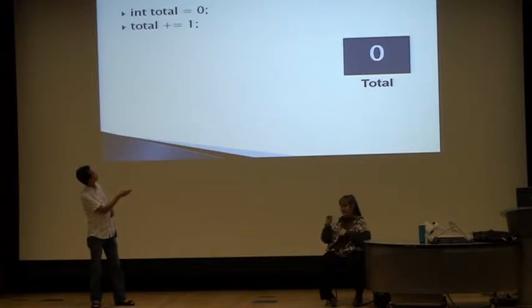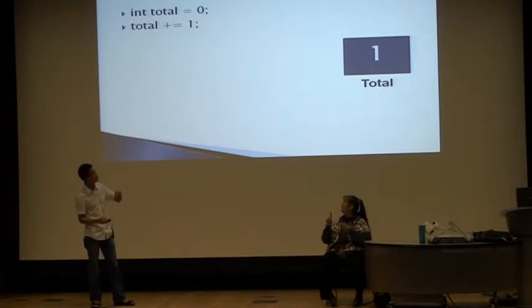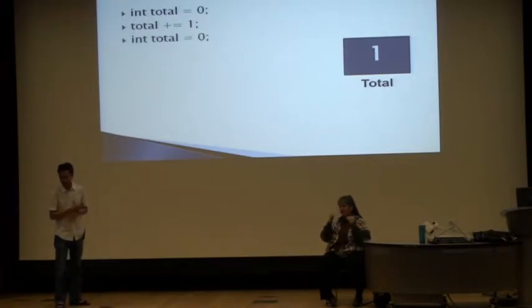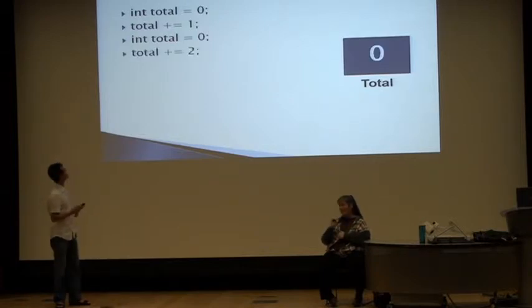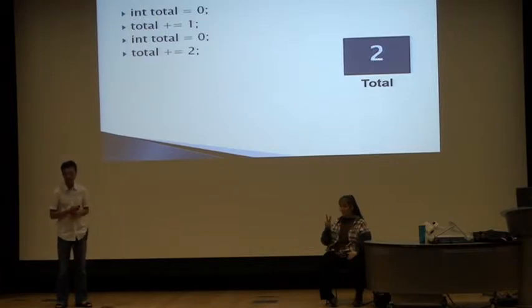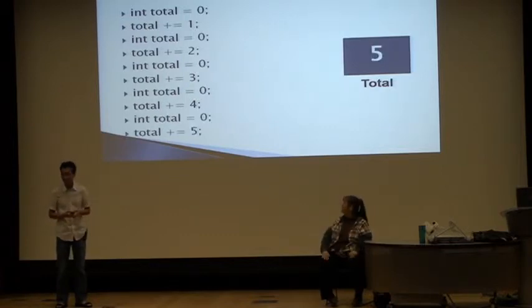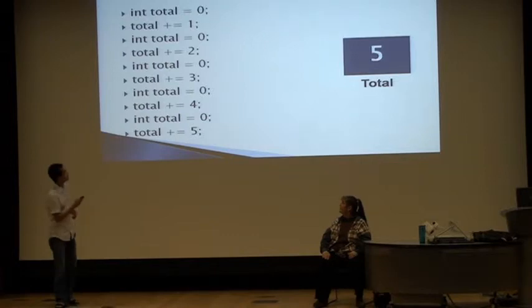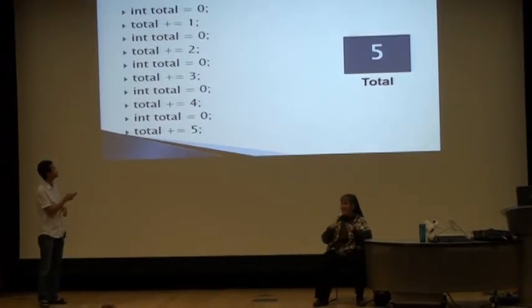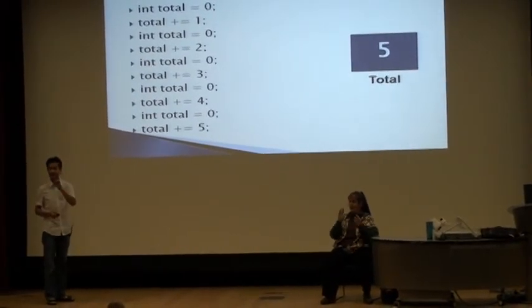So we have int total equals to zero. So the value of it is equal to zero. And then total plus equals to one. So then it's going to change from zero plus one to one. And then it's going to say int total equals to zero again. So we'll have the total just go back to zero. Then I'm going to say total plus equals to two. Then it's going to say two. And then it's going to do the same thing for three, four, and five. So that's what's happening when you put that same total equal to zero code inside the for loop.